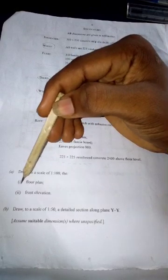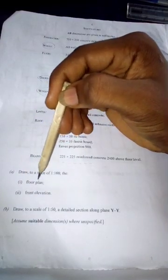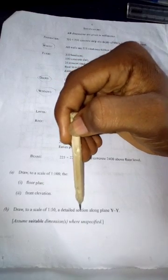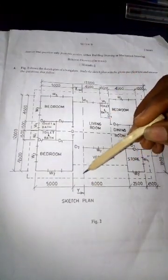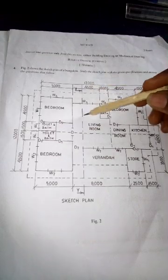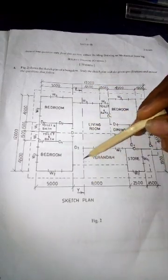For this question we're dealing with the floor plan only. There are three parts: the floor plan, the front elevation, and a detailed section along plane Y-Y. In another video I'll address the section drawing, but today we're dealing with floor plan.